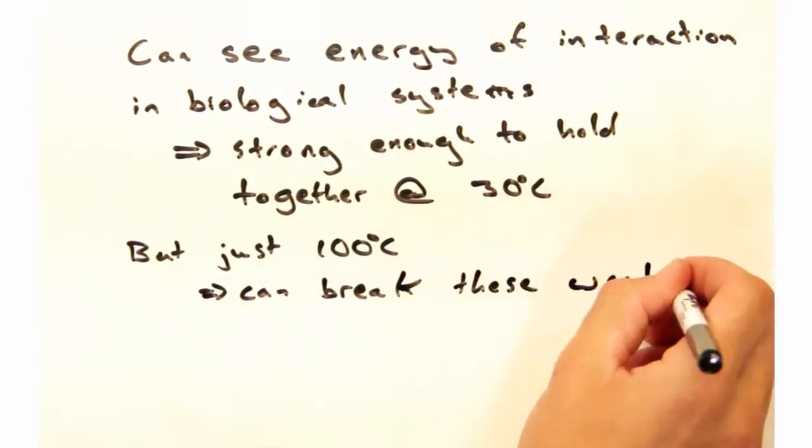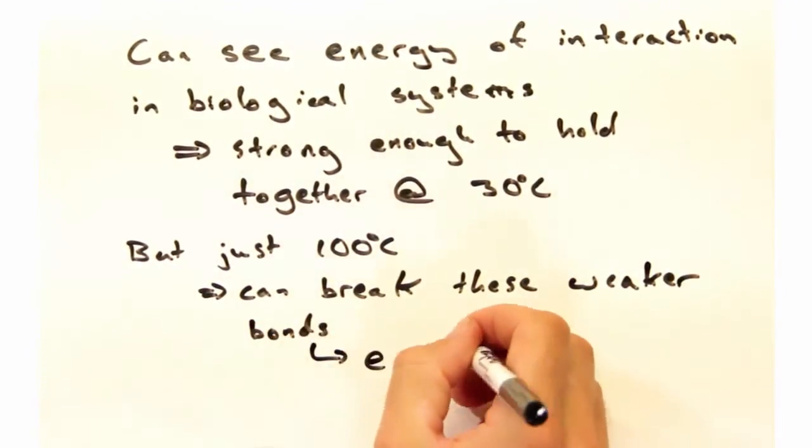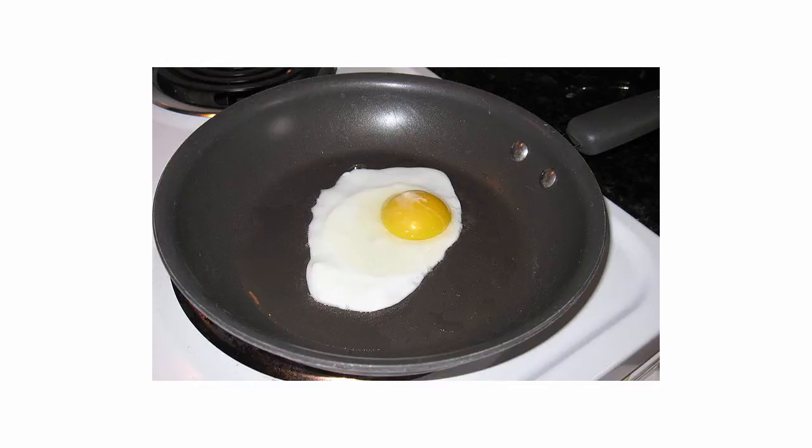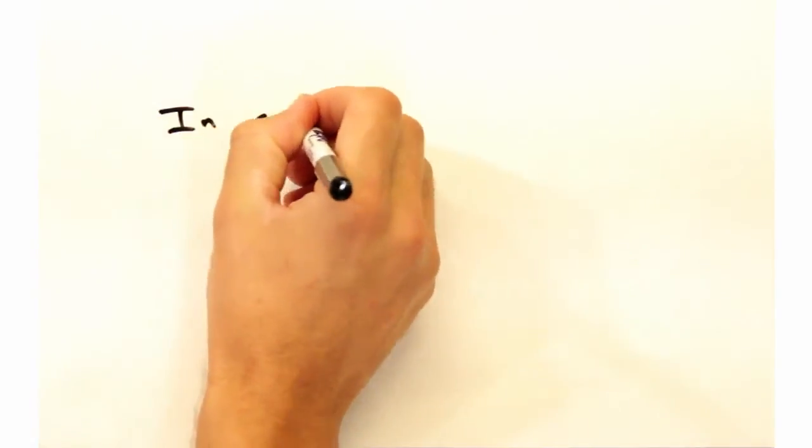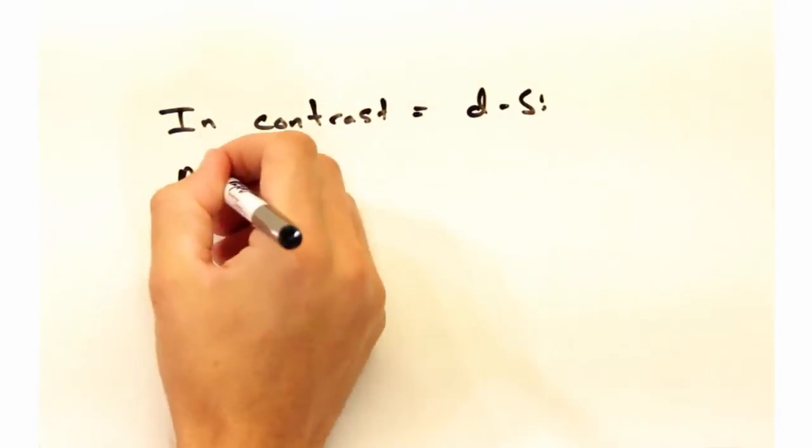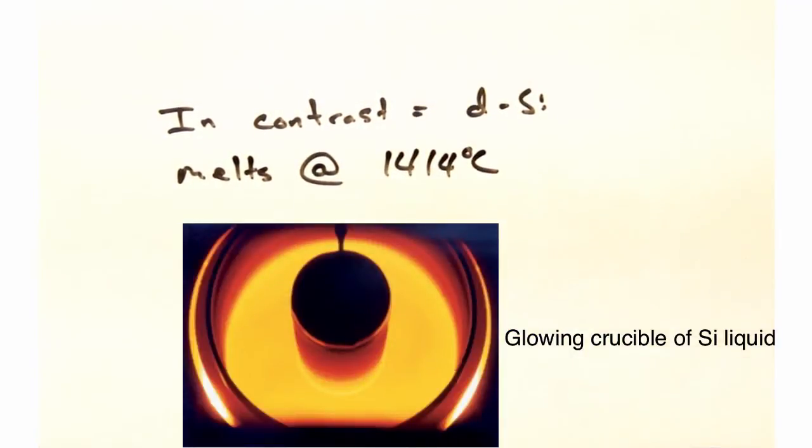So the heat is going to start breaking some of the lower energy interactions, such as our van der Waals bonds. The proteins in the egg white will then have to reconfigure themselves into new structures, which gives the cooked egg its white color. But that didn't take much temperature as opposed to melting something like silicon, which is based off of covalent bonding.